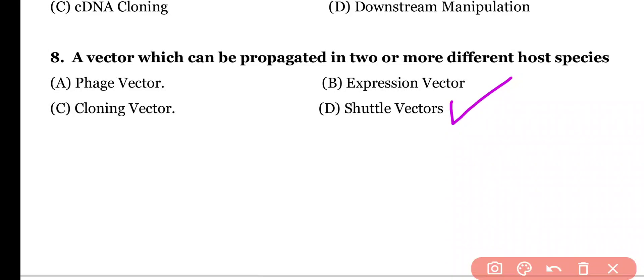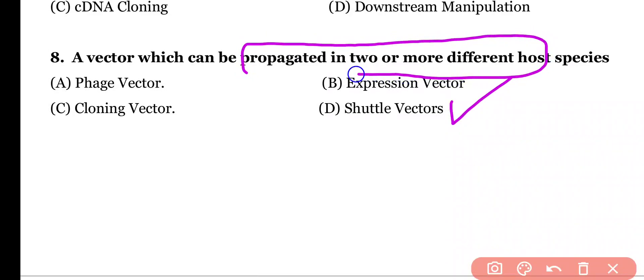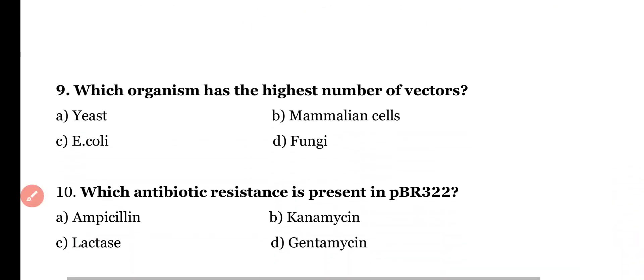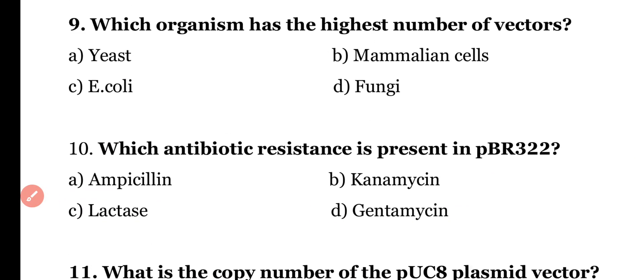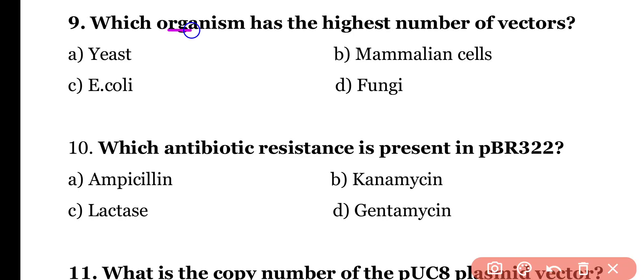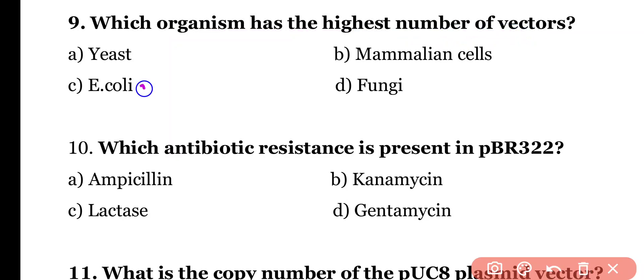Shuttle vectors have the ability to propagate in two different hosts, so a shuttle vector can grow in prokaryotes as well as in eukaryotes. Question 9: Which organism has the highest number of vectors? Yeast, mammalian cells, E. coli, or fungi. Correct answer is option C — the highest number of vectors are present in E. coli.